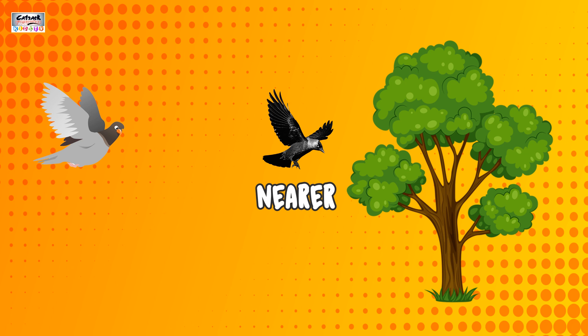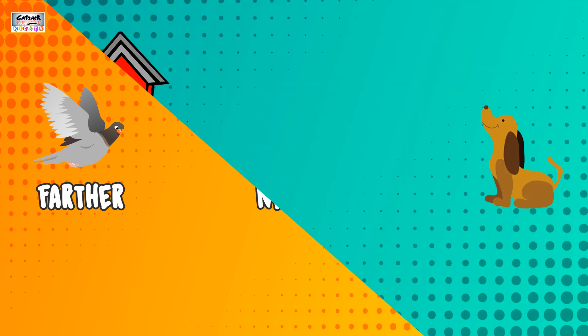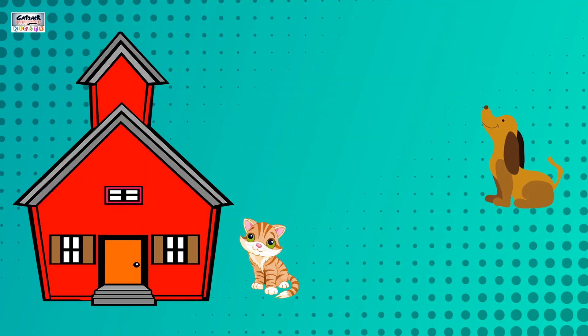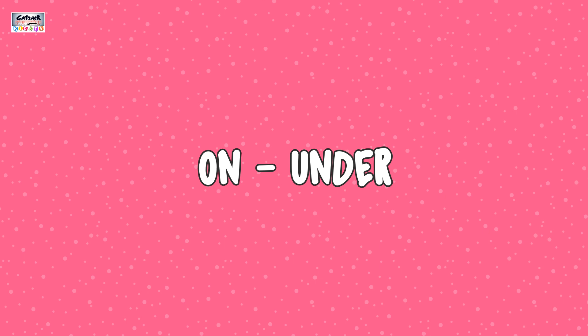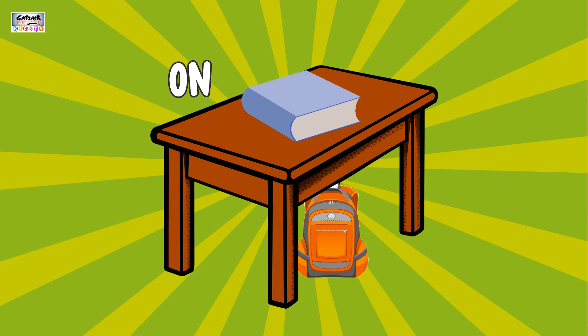Nearer and further. Observe this picture carefully. The crow is nearer to the tree, the pigeon is further from the tree. In this picture, the cat is nearer to the house and the dog is further from the house.